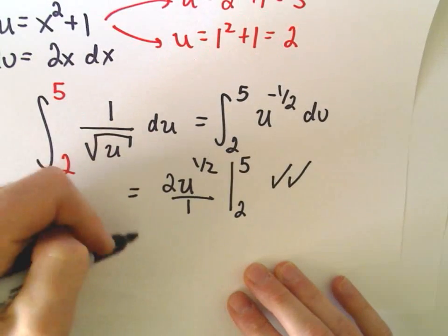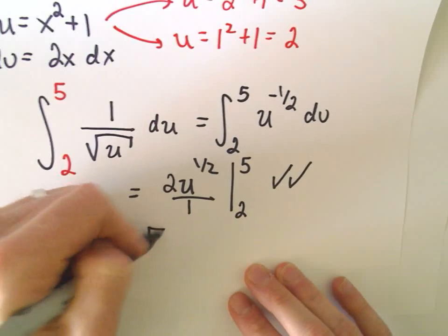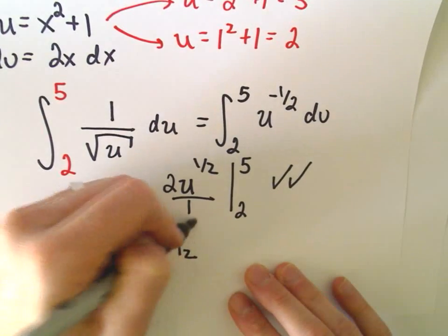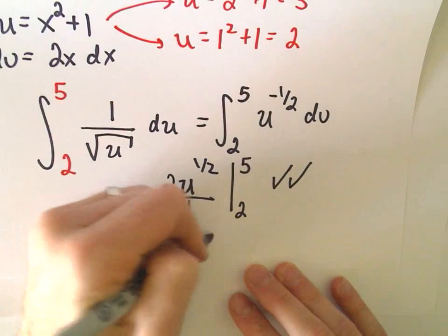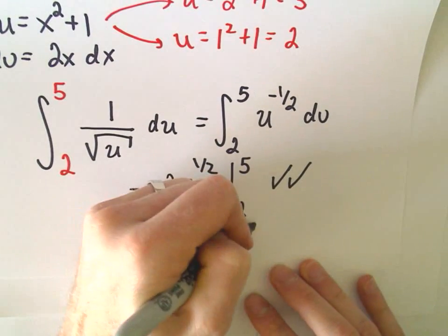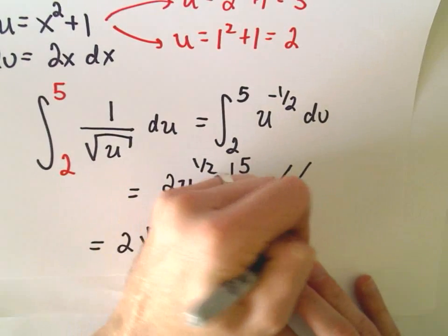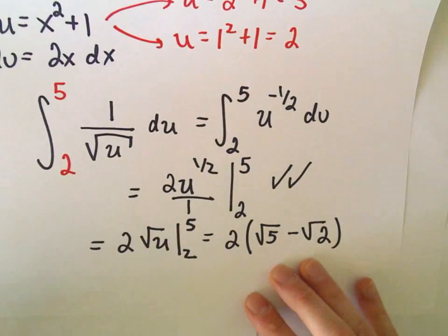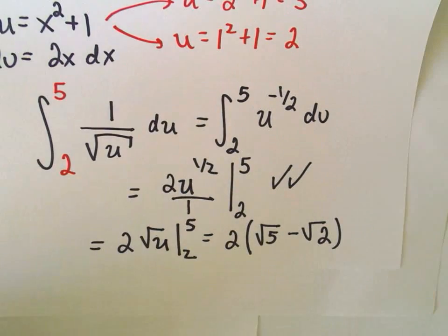If we plug it in, you could even pull the 2 out. And this is the same thing as square root of u, from 2 to 5. If we plug in our limits of integration, we would have 2 times the square root of 5 minus the square root of 2. And that's absolutely no problem.